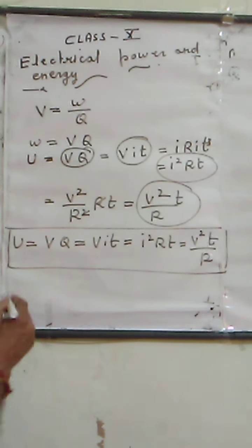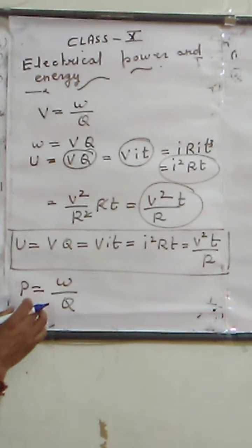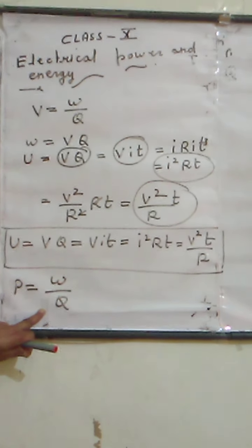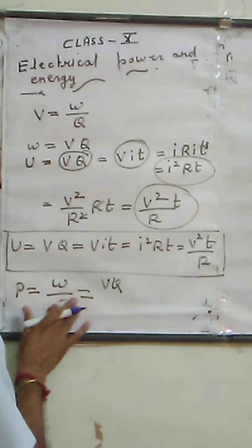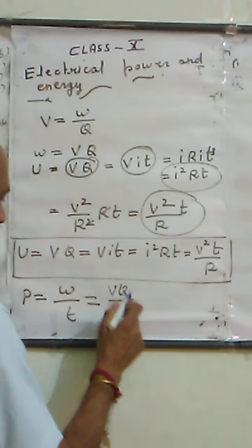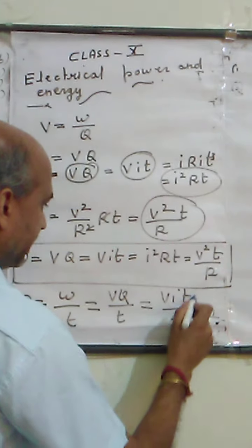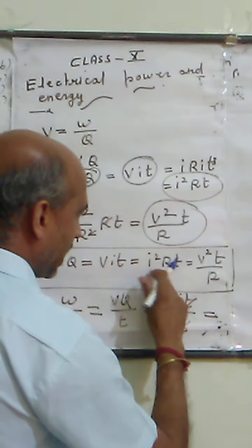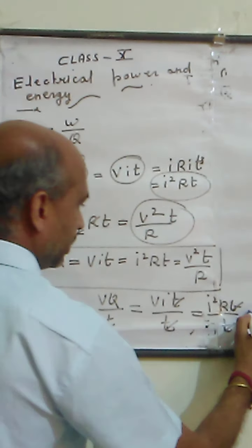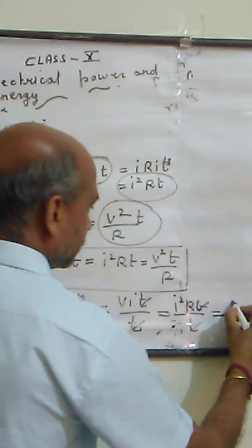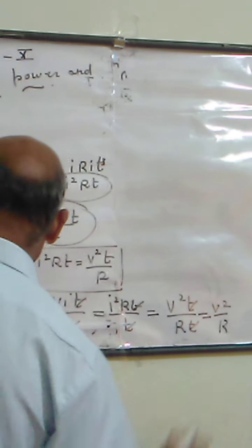Now if we talk about power, we know that power equals W upon t. By putting different values of W we can achieve different mathematical expressions for power. When we put W equals VQ, we get VQ upon t. When we put W equals VIt, t cancels and we get VI. When we put W equals I²Rt, we get I²R. When we put W equals V²t/R, we get V²/R.